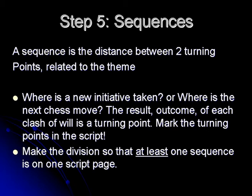Step five: sequences. We are now closing the text even more and deciding every sequence in the text. A sequence is the distance between two turning points. If you remember — a conflict, a change of direction, is a turning point. So where is a new initiative taken? Where is the next chess move? There is like my turn, your turn — the outcome of each clash of will is a turning point. So mark the turning points in the script and make the division, so that at least one sequence is on one script page.